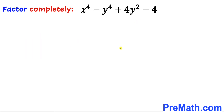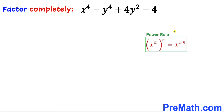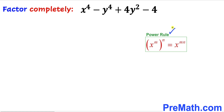Let's get started. Let's make an observation — we can see we have x power 4 and y power 4. Now let's recall the power rule of exponents: if we have x power m and then power n, in other words nested exponents, this can be written as x power m times n.